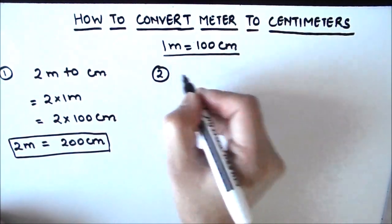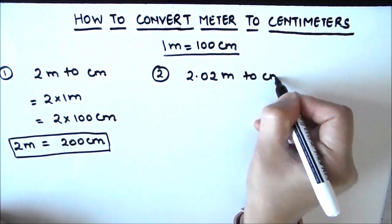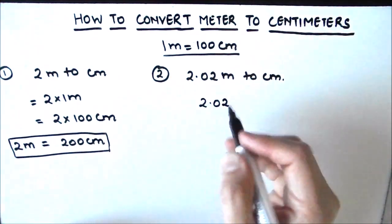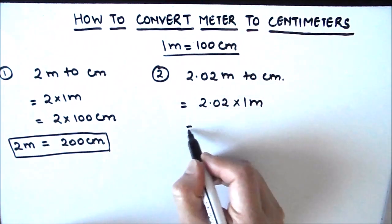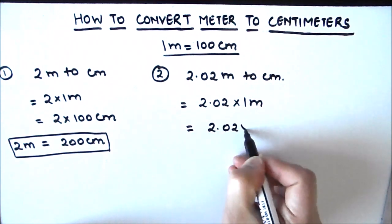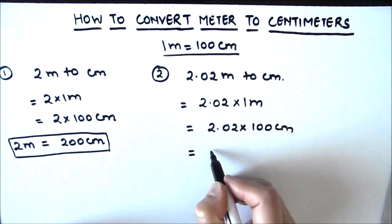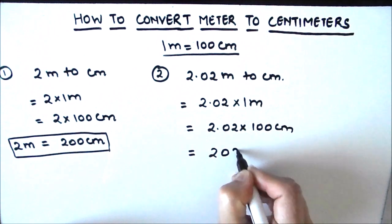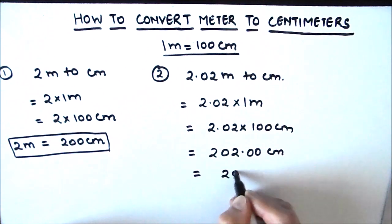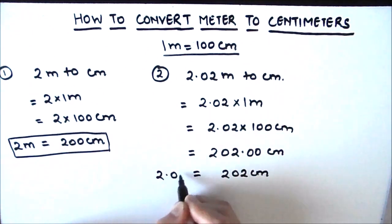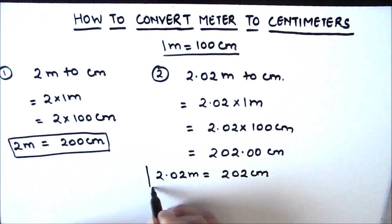Our second example is to convert 2.02 meters to centimeters. Using the same logic, 2.02 meters can be written as 2.02 times 1 meter, and in place of 1 meter we write 100 centimeters. Multiplying these two numbers gives us 202 centimeters. So 2.02 meters is equal to 202 centimeters.